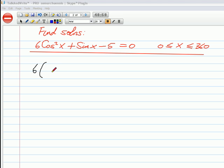If sin²x + cos²x = 1, well then cos²x is the same as 1 - sin²x, so we can replace that with 1 - sin²x. And the rest is the same, so it's plus sinx minus 5 equals 0.